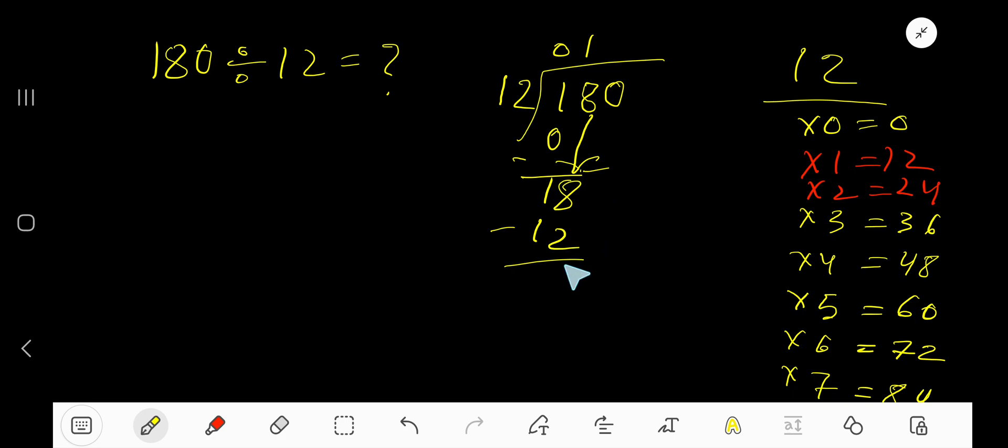Okay, now subtract. If you take away 2 from 8, you have 6. If you take away 1 from 1, you will have 0. That is 6. Now bring down this digit. 12 goes into 60 how many times?